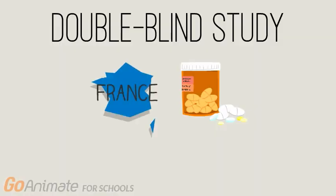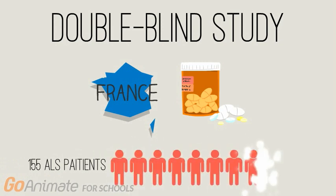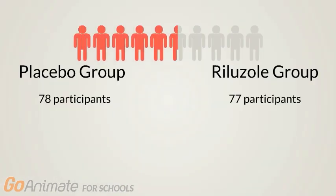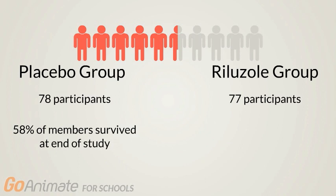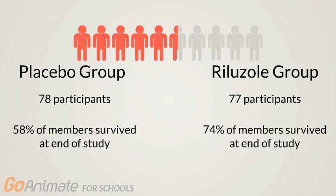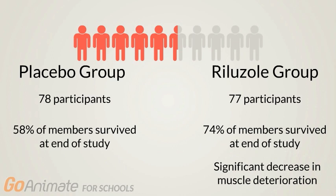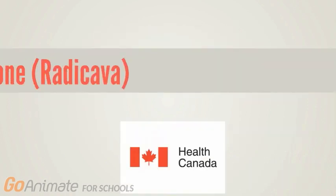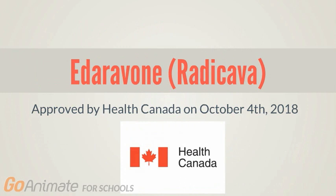In the study, 78 participants were given a placebo while 77 participants were given 50 milligrams of riluzole twice a day. After one year of treatment, 58 percent of the placebo-treated group were still alive, while 74 percent of the riluzole-treated group were still alive. The riluzole-treated group also showed a significant delay in the deterioration of muscle strength and functional ability compared to the placebo group.